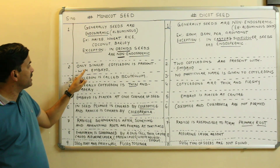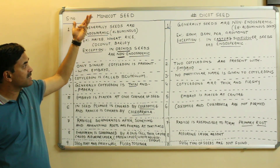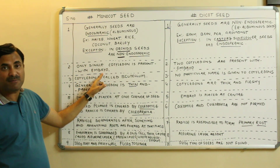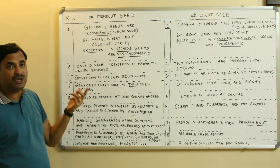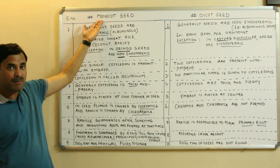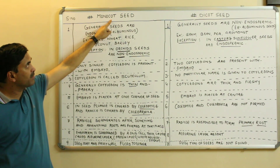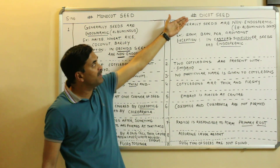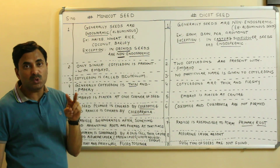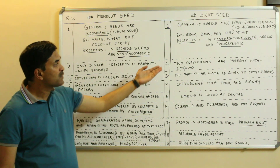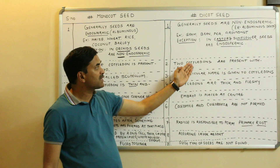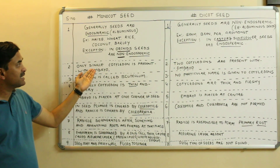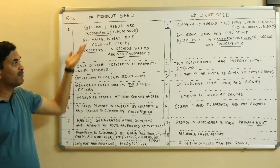The second point: monocot seeds are called monocot because they have a single cotyledon — 'mono' means single and 'cot' comes from cotyledon. Dicot seeds are called dicot because 'di' means two, so two cotyledons are present with the embryo. Seeds with two cotyledons are dicot seeds; seeds with a single cotyledon are monocot seeds.